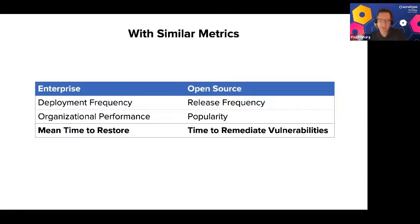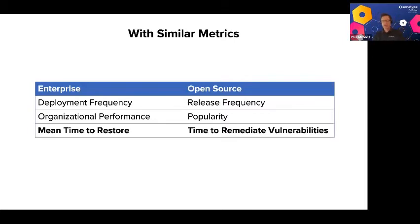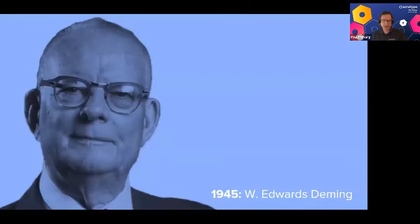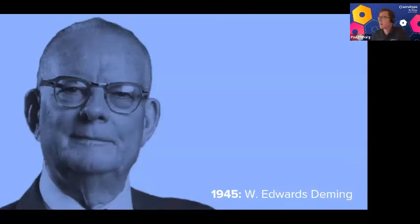We also look at mean time to remediate vulnerabilities — the open source equivalent of mean time to restore in an enterprise environment. We lean heavily on the work of Edwards Deming, who was instrumental in helping Japanese manufacturers rebuild their processes after World War II. His principles include: source materials from the best suppliers, source only the best parts from those top suppliers, and trace and track every part from start to finish.